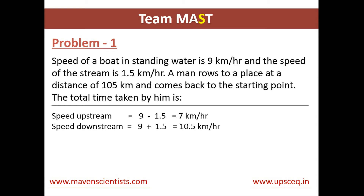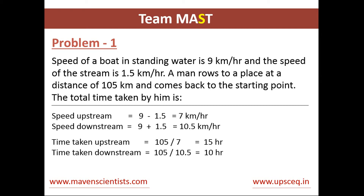The upstream speed is 9 minus 1.5, which gives 7.5 km per hour. Now, to calculate the speed of the downstream, we add the speed of the boat in standing water to the speed of the stream, which is 9 plus 1.5, giving us 10.5 km per hour.